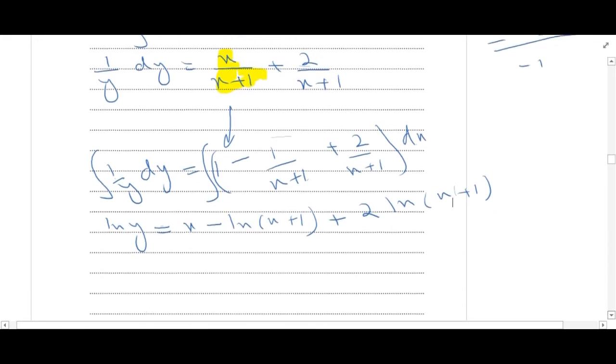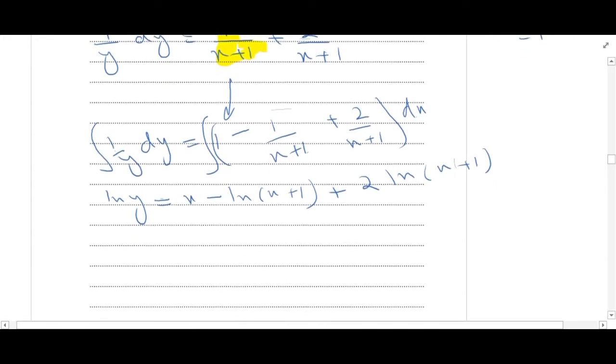Okay, now ln of y is equal to x plus ln of (x plus 1) plus 2 ln of (x plus 1). And the corresponding integral constant would be c.